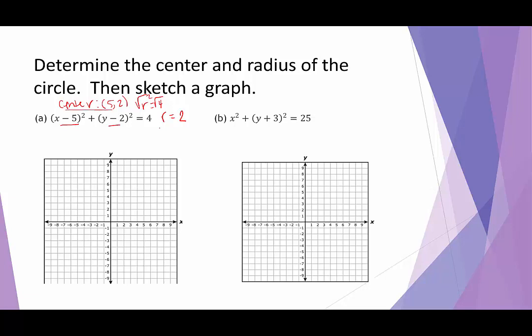That gives us the two pieces of information: center and radius. Now we sketch the graph. Starting with the center at 5, 2, we use the radius to find four points — going straight up 2, right 2, down 2, and left 2 — then connect them as best we can to form the circle.